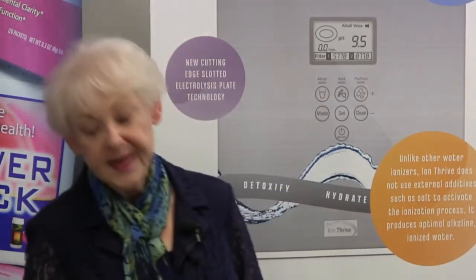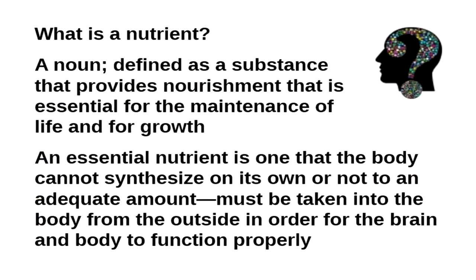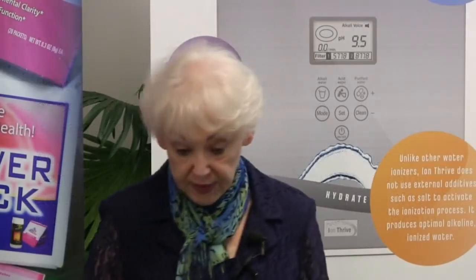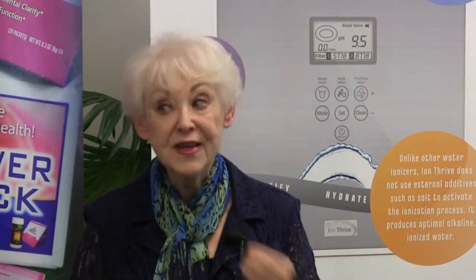So what's a nutrient? It's a noun — it's defined as a substance that provides nourishment that is essential for the maintenance of life and for growth. An essential nutrient is something the body doesn't make on its own; you have to take it in from the outside. And if you don't get it in the amounts the body needs, then the brain and body are not going to be functioning optimally.